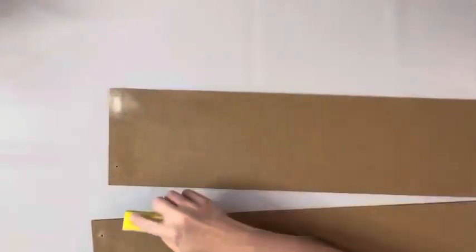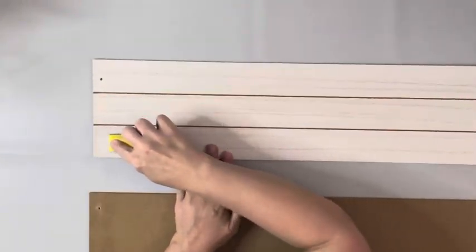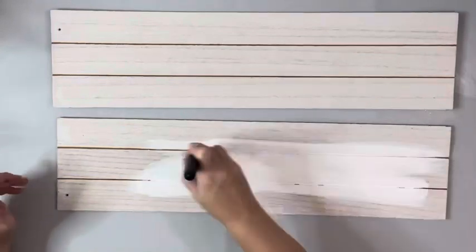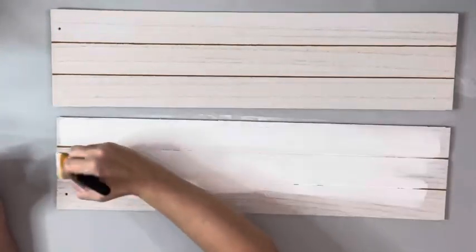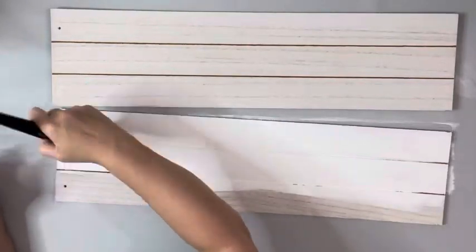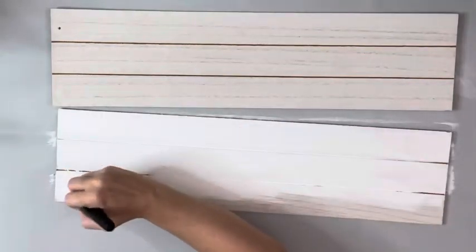Once the wood filler was dry, I sanded down those spots. Then I took some water and sprayed it on the signs. It just helps the paint spread better. I covered those with the same white chalk paint and gave those two coats, covering them entirely.